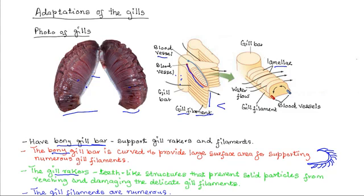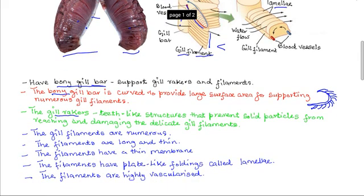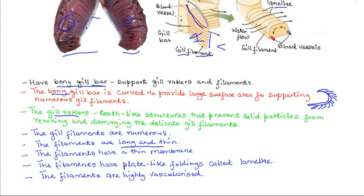Most of the adaptive features for gases exchange are to be found on the filaments. These filaments are numerous in number — there are so many of them — and in total they provide a large surface area for gases exchange. The filaments are also long and thin, which increases the surface area to volume ratio for a faster rate of diffusion. The filaments also have a thin membrane separating the blood in the filament from the water, enabling rapid diffusion of gases.